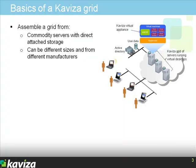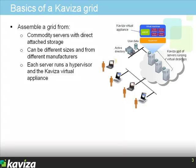These machines can be of different sizes and from different manufacturers. All you need is to run a hypervisor on each bare metal machine — no Windows Server operating systems required. On each of those machines, you set up the Kaviza virtual appliance.